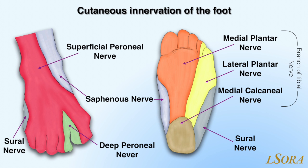This diagram illustrates the cutaneous innervation of the foot. The dorsum of the foot is mainly supplied by the deep and superficial peroneal nerve. The plantar aspect of the foot is mainly innervated by the medial and lateral plantar nerves and the medial calcaneal nerve, which are all branches of the tibial nerve. The saphenous nerve innervates the medial component of the foot and the sural nerve the lateral.